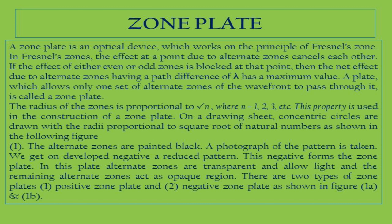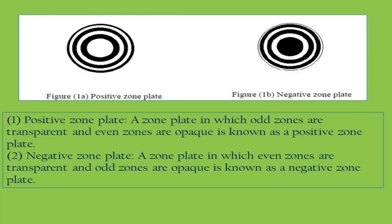In the positive zone plate, all odd zones are transparent while even zones are opaque. In the case of the negative zone plate, the even zones are transparent and the odd zones are opaque.